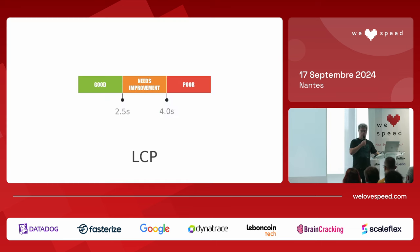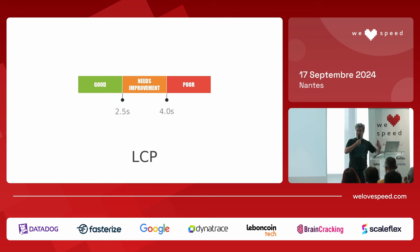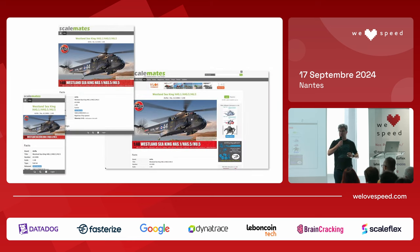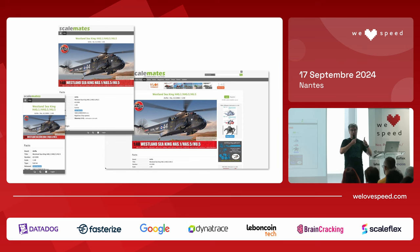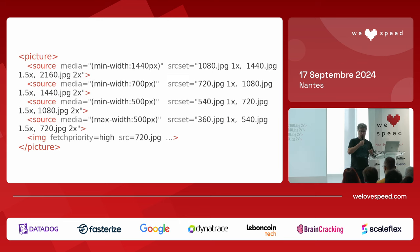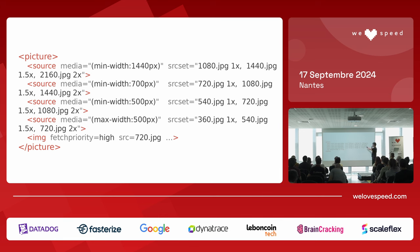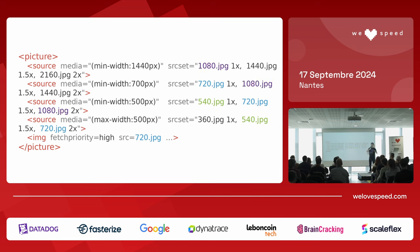Next: LCP, or Largest Contentful Paint. What is typically the LCP element on a scale modeling website? An image — because scale modelers like to present their models with big pictures. For responsive images, I'm using the picture element, and I selected breakpoints carefully so that based on dimensions and device pixel ratio, the right image is loaded. Importantly, I reuse certain image sizes — the 540-pixel image and 720-pixel image are reused across multiple device/DPR combinations.